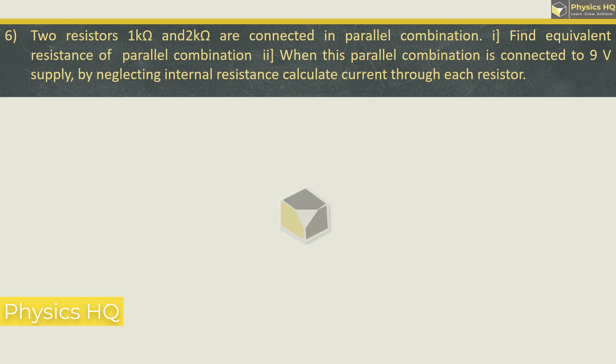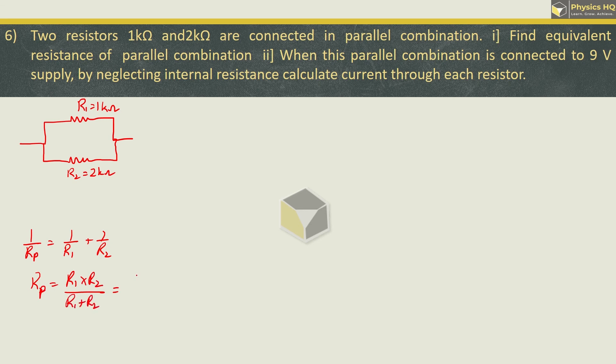Two resistors 1 kilo ohm and 2 kilo ohm are connected in parallel. Find their equivalent resistance of parallel combination. So we got two resistances, R1 is 1 kilo ohm and R2 is 2 kilo ohm. Parallel combination can be calculated as 1 by Rp equals 1 by R1 plus 1 by R2, or you can write Rp equals R1 into R2 upon R1 plus R2. R1 is 1 kilo or 1 into 10 raise to 3, R2 is 2 kilo or 2 into 10 raise to 3, divided by 1 kilo plus 2 kilo is total 3 kilo. So 10 raise to 3 cancels. Then we are left with 2 by 3 into 10 raise to 3. Now 2 by 3 can be written as 0.66 and 10 raise to 3 we write as kilo. So parallel equivalent is 0.666 kilo ohm.